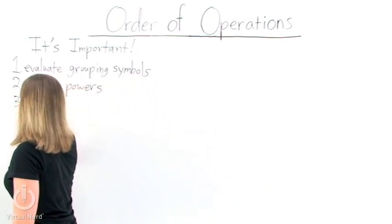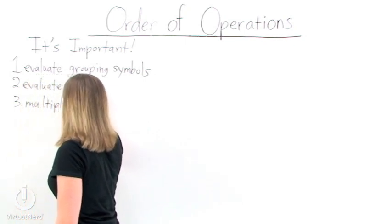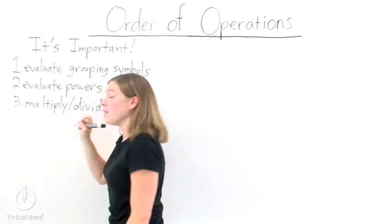Step three is to multiply and divide. You want to do this the same way that you would read a book, from left to right.